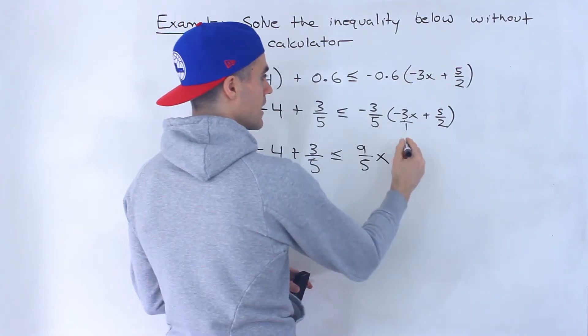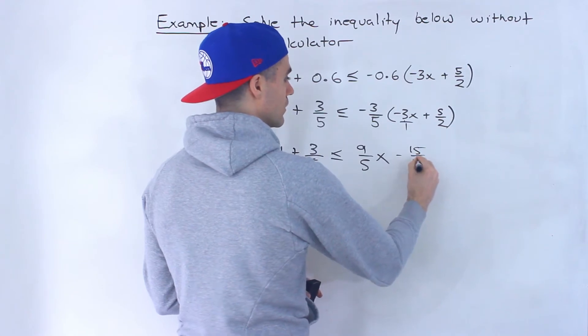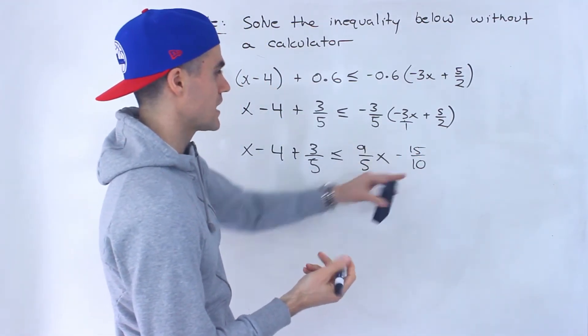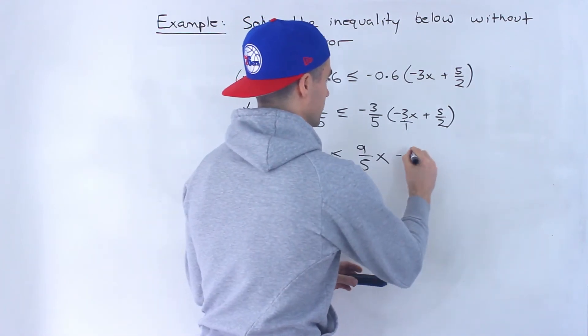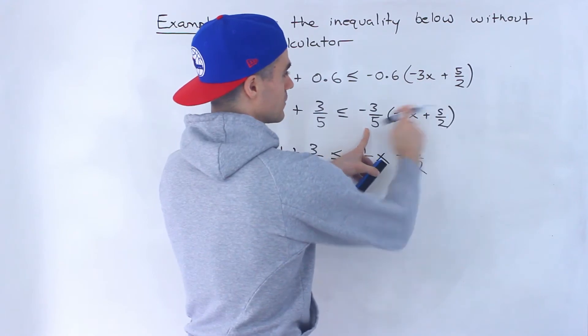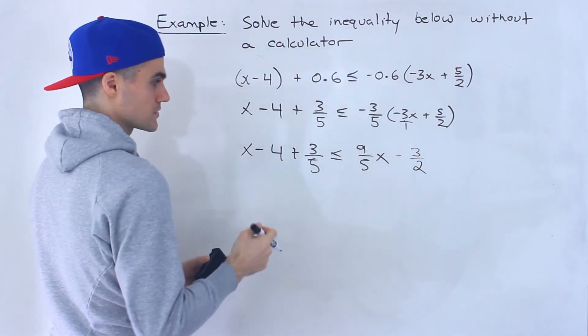And this times that would give us minus 15 over 10. And then the minus 15 over 10, that simplifies to negative 3 over 2. And you could see it as well because the 5s here would cancel out. So we'd have negative 3 over 2 left when we multiply those.